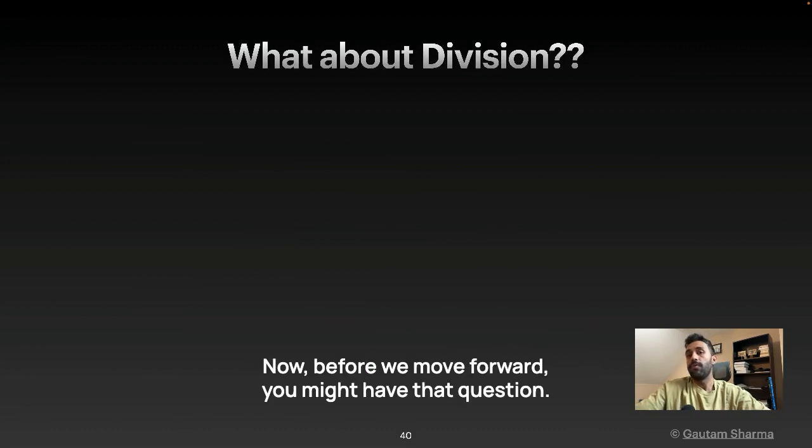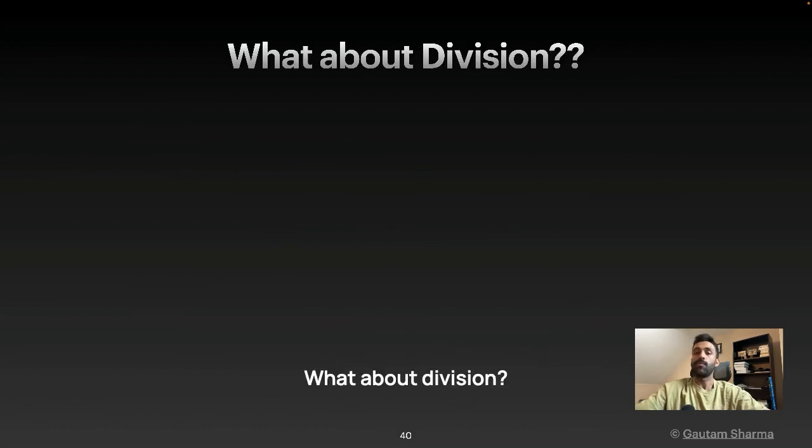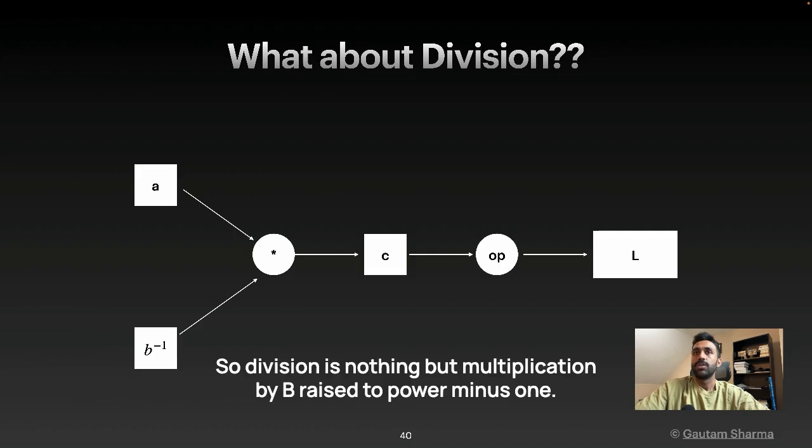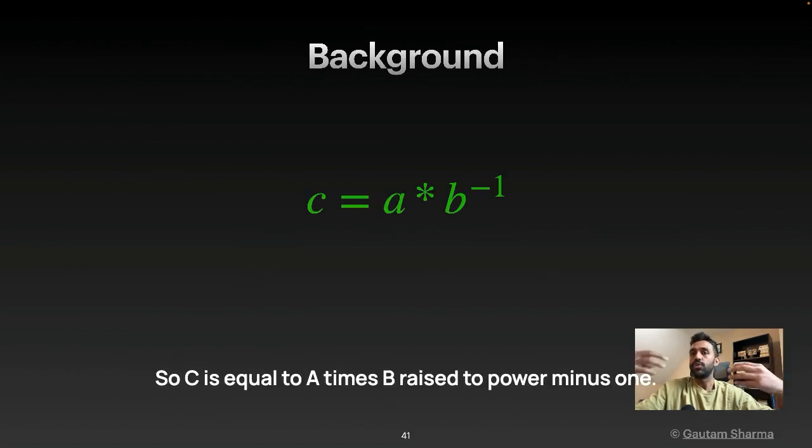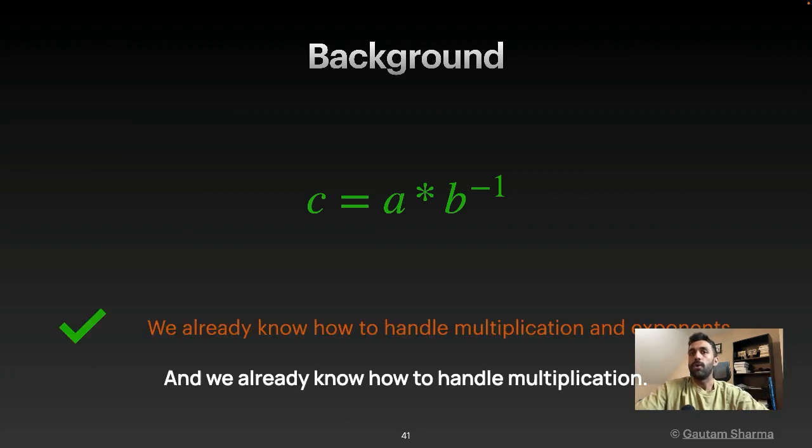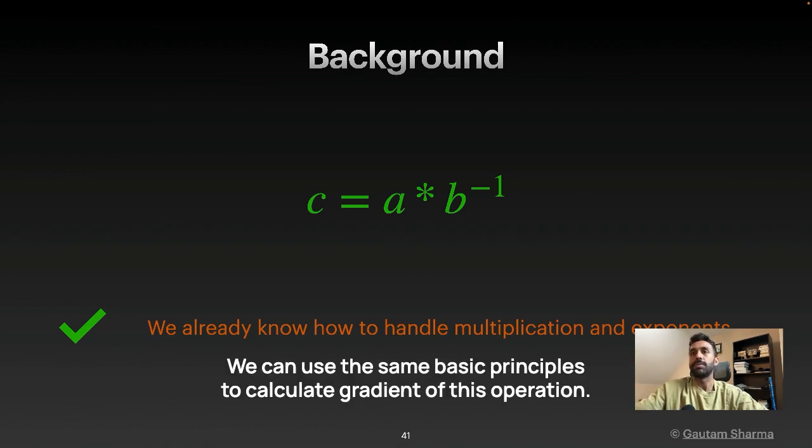Now, before we move forward, you might have that question, what about division? So division is nothing but multiplication by B raised to power minus 1. And again, let's break it down. So C is equal to A times B raised to power minus 1. And we already know how to handle multiplication and exponents. But we can use the same basic principles to calculate gradient of this operation.